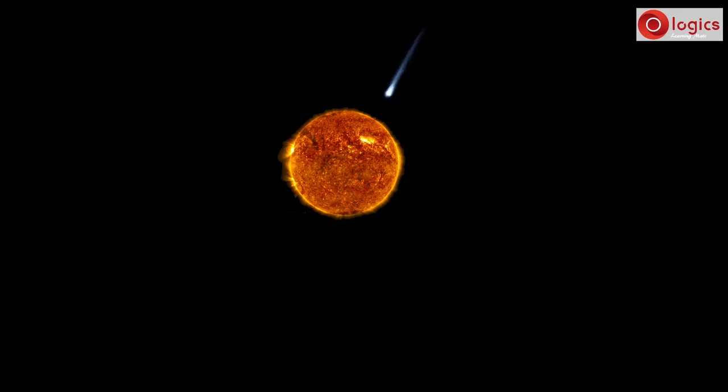Observe the tail of a comet always points opposite to the sun. The tail is formed due to heat of the sun, not due to the comet's direction.